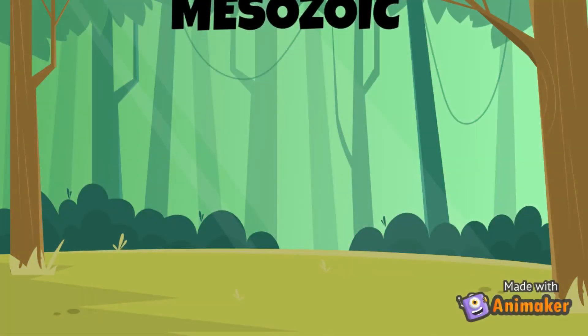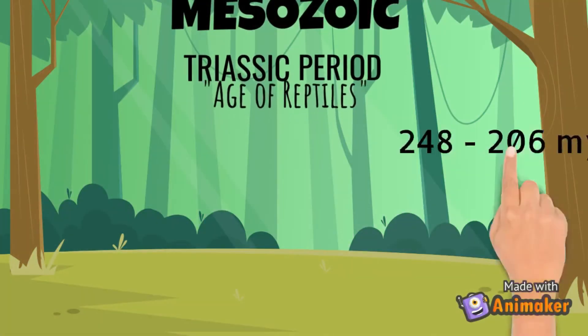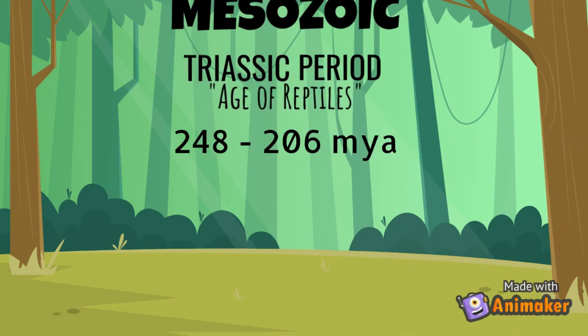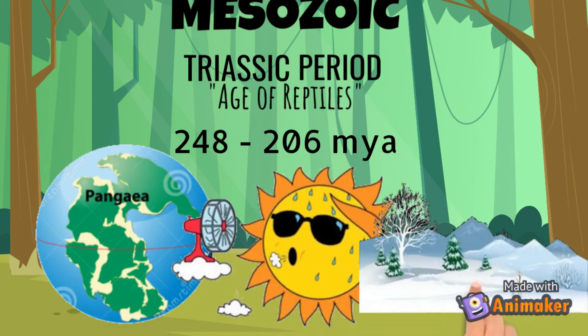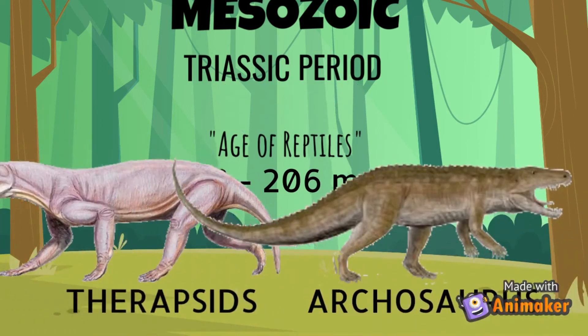The first period in the Mesozoic era is the Triassic period, an era that occurred 248 to 206 million years ago. Most of the continent was concentrated in the supercontinent Tangia, having a generally very dry climate with hot summers and cold winters. Reptiles were very dominant.